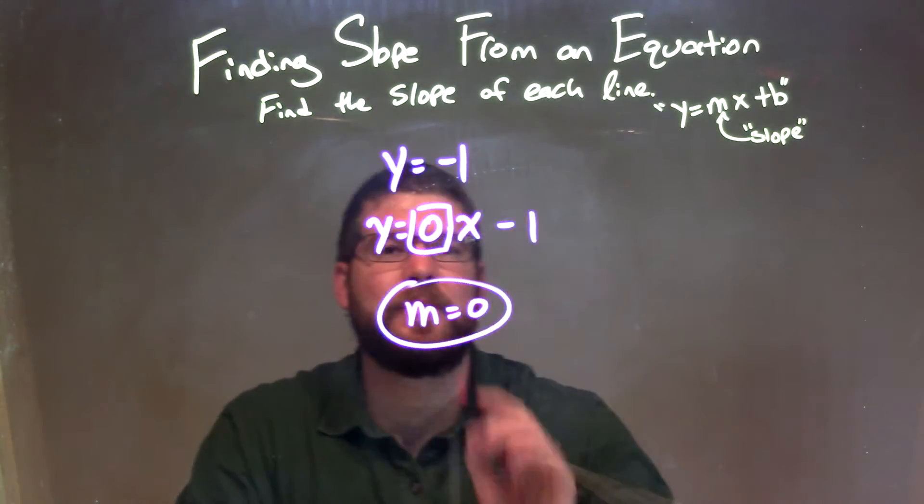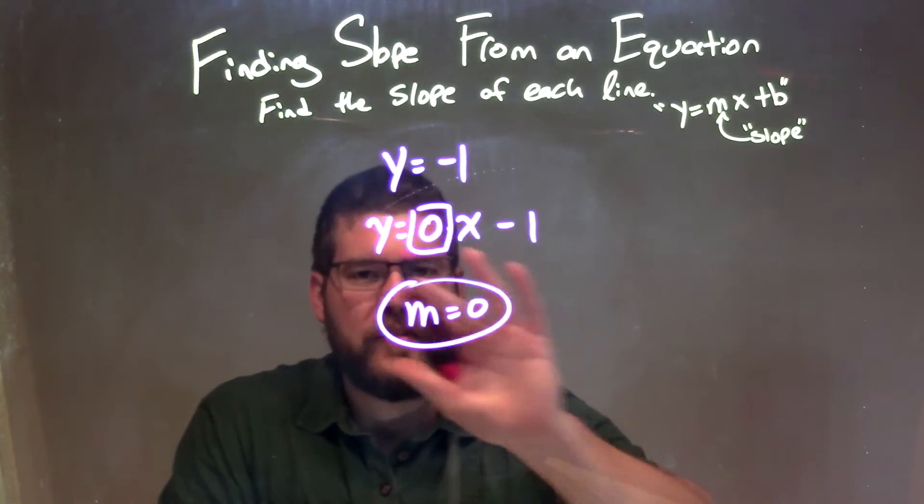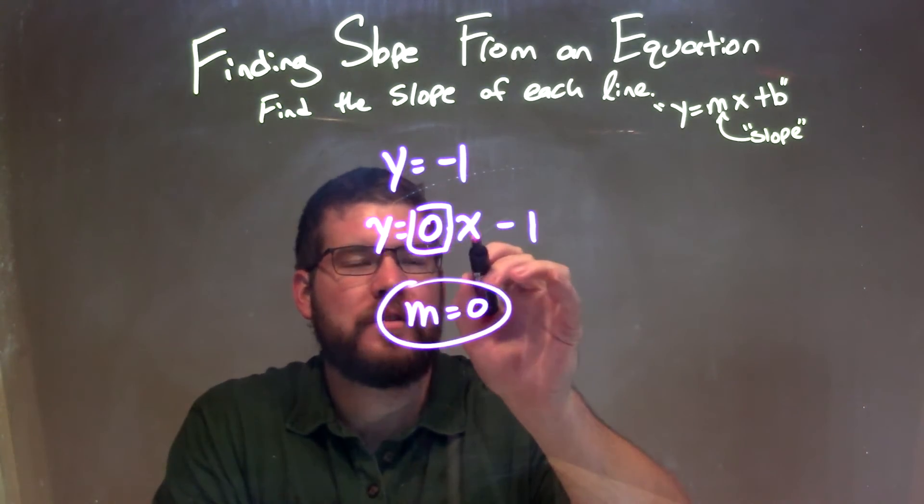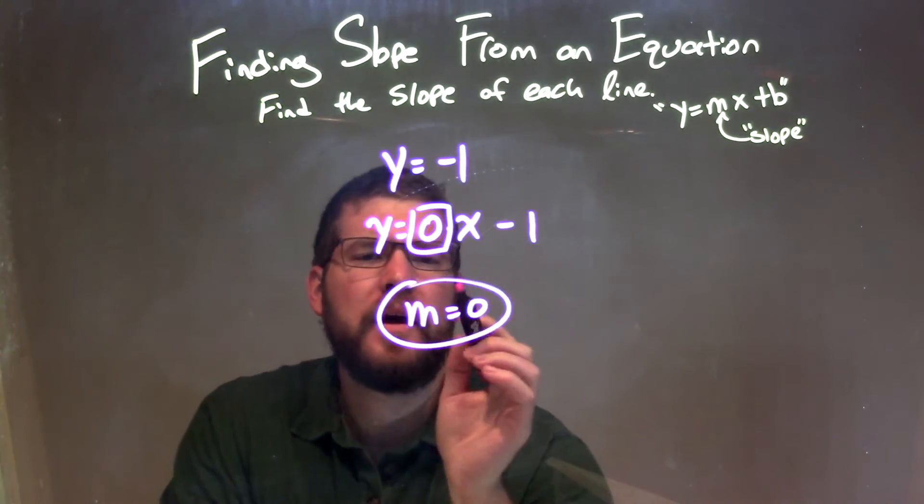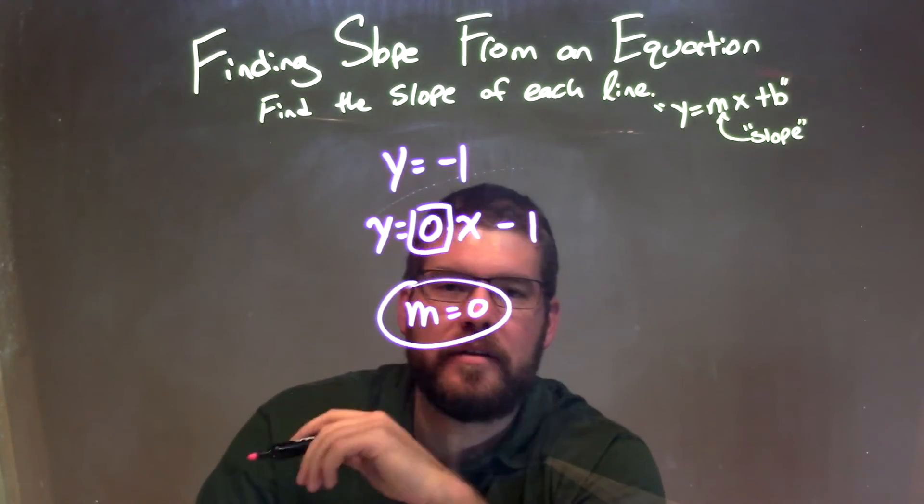But I can rewrite this to be y equals 0 times x minus 1. Same equation. Looks a little different. But it helps me identify the coefficient in front of x, which is our m value, which is 0. So we have our y equals mx plus b form here. So our m value, our slope and final answer is just 0.